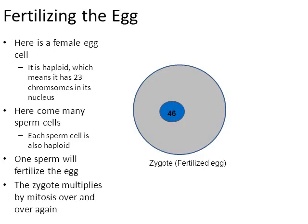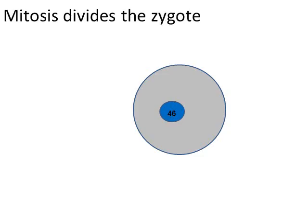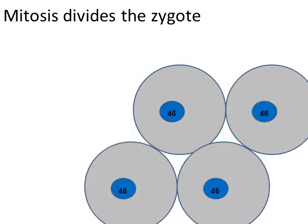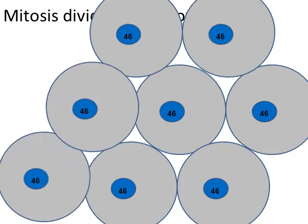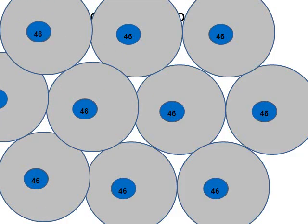That zygote — that fertilized egg — is going to multiply by the cellular process called mitosis. For nine months, that zygote is going to divide and become two cells, four, six, eight, and so on. Mitosis divides the zygote: one cell becomes two, two become four. It's not called a zygote anymore — it's simply a growing embryo. It continues to divide again and again and again.